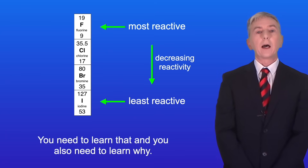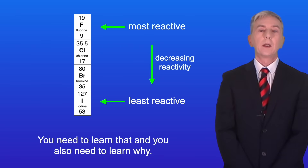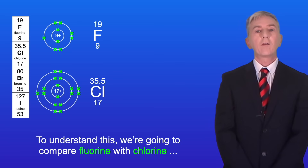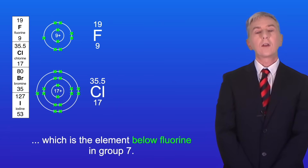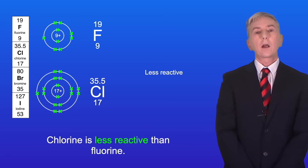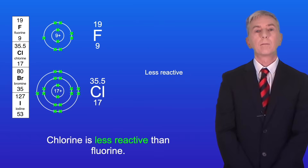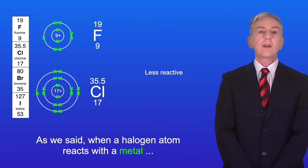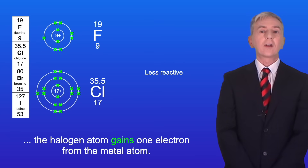You need to learn that, and you also need to learn why. To understand this we're going to compare fluorine with chlorine, which is the element below fluorine in Group 7. Chlorine is less reactive than fluorine. When a halogen atom reacts with a metal, the halogen atom gains one electron from the metal atom.